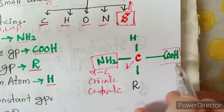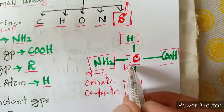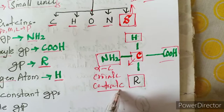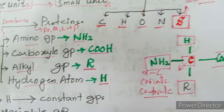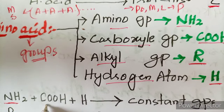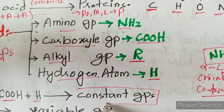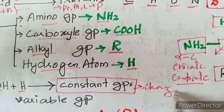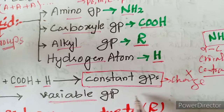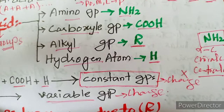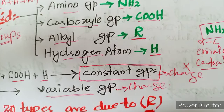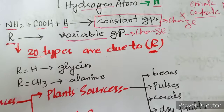The amino group, carboxyl group, and hydrogen are constant groups — they do not change. The alkyl group (R) is a variable group — it changes. Due to this variable alkyl group, there are 20 different types of amino acids.